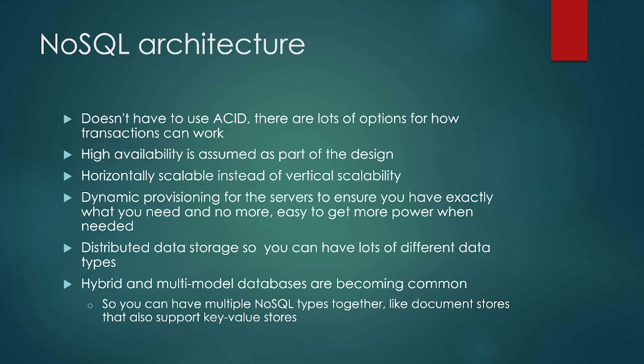NoSQL uses horizontal scalability instead of vertical scalability. Vertical scalability means adding more power to the server; horizontal scalability means adding more servers or nodes. NoSQL is designed to be horizontally scalable, which is easier and doesn't have the same limitations. Vertical scalability runs into limits of cost and how much you can reasonably upgrade one server, whereas you can add servers together somewhat indefinitely. You do still have to worry about communication between the nodes.